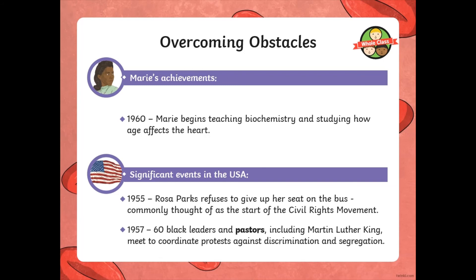In 1960 she began to teach biochemistry and studied how age affects the heart. Also, in 1955, Rosa Parks refused to give up her seat on the bus, which is the start of the civil rights movement. And from 1955 to 1960, Black leaders and pastors, including Martin Luther King, met to coordinate protests against discrimination.